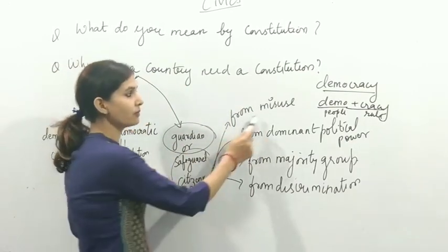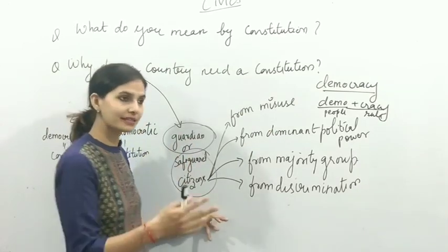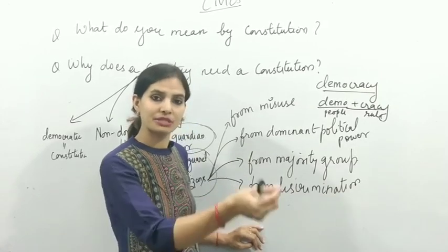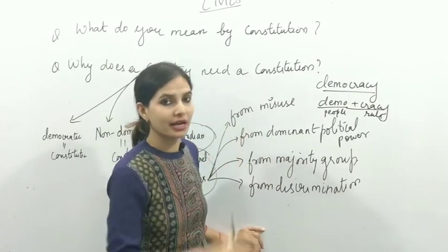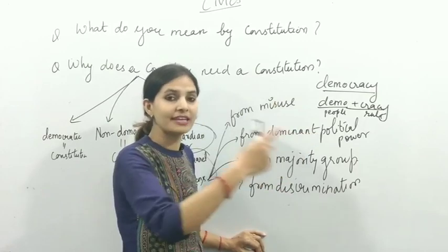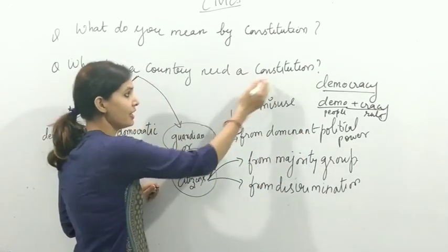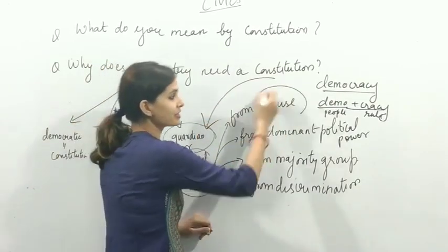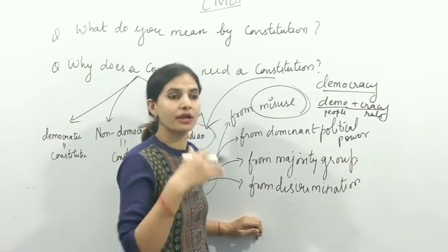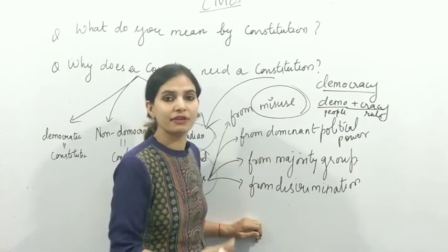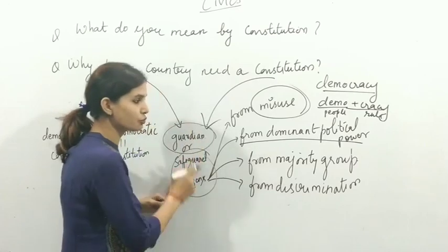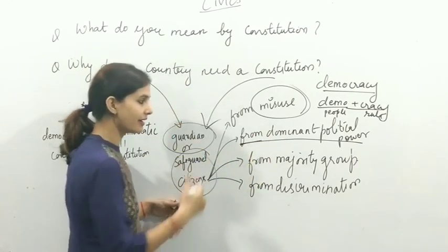The constitution protects from the misuse of power by political leaders. If political leaders misuse their power, our constitution checks that. It limits what our parliament can do. The constitution is our guardian because it protects us from any kind of mischief. If someone tries to dominate in power or as a representative, the constitution safeguards us from that dominant political power.